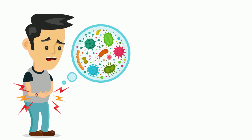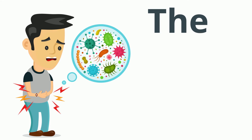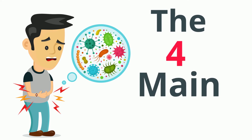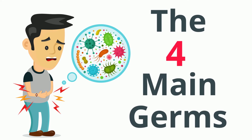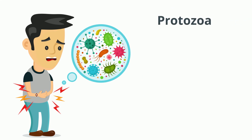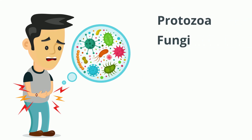Most diseases are caused by four very small groups of organisms. Let's call them the four main germs. They include Protozoa, Fungi, Bacteria, and Viruses.